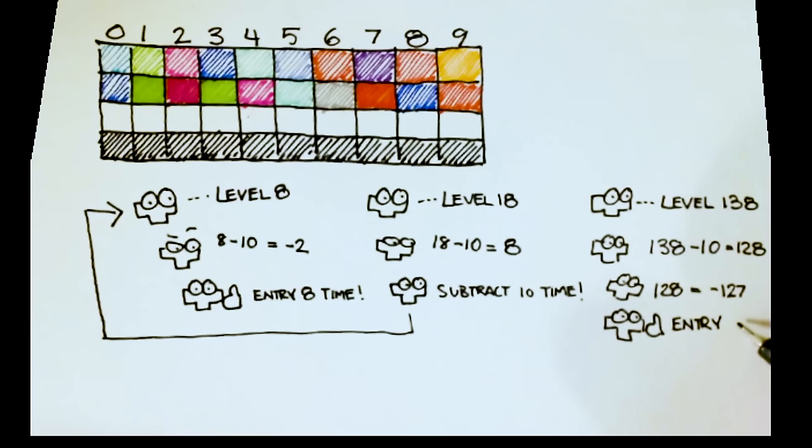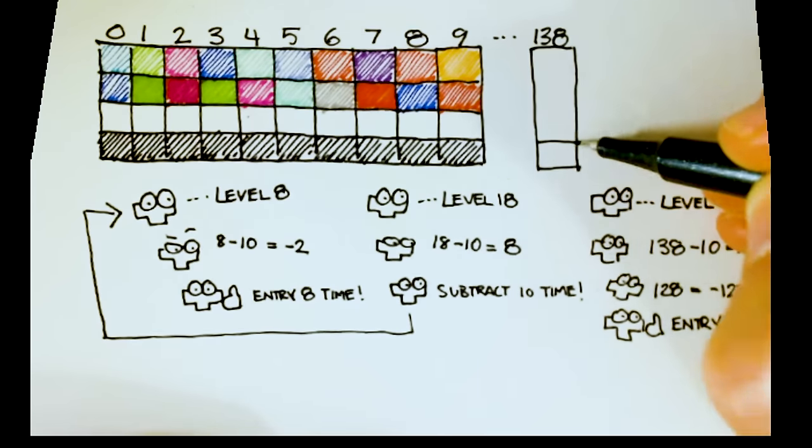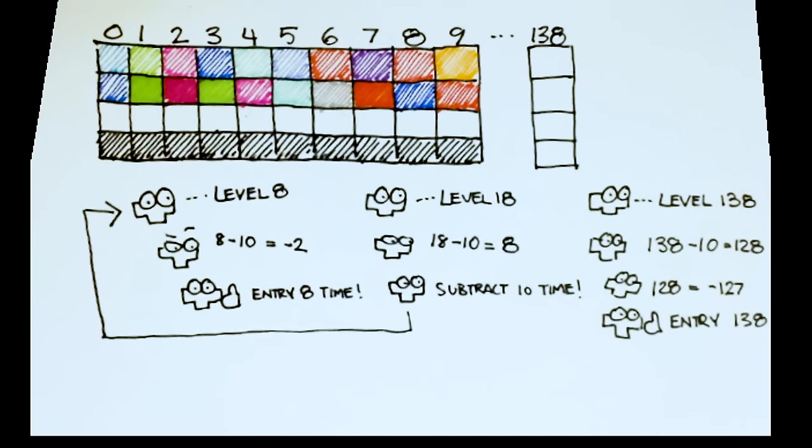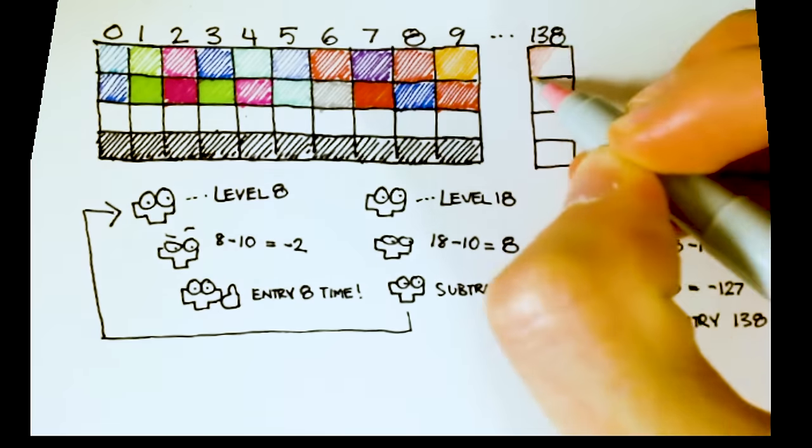Therefore, it loads that entry of the color table thinking there shouldn't be any problem. There is a problem being that it's loading values past the end of the table, which were never intended to be read as colors.